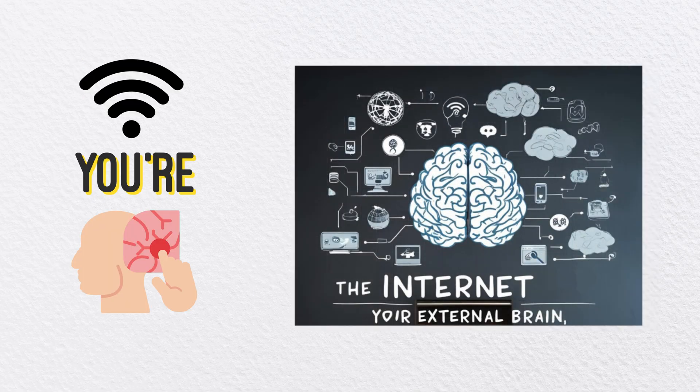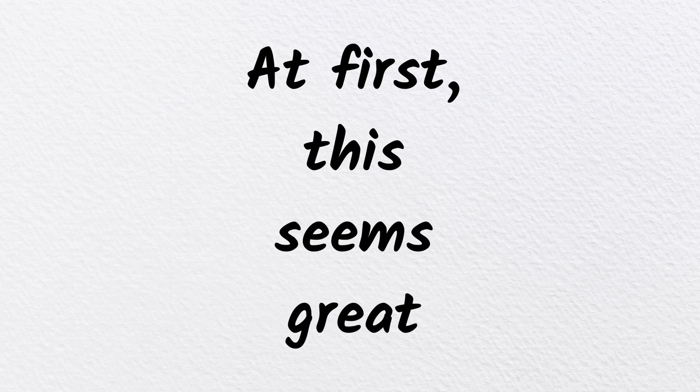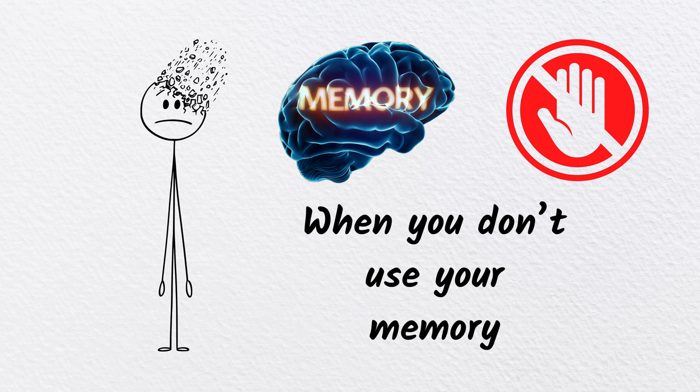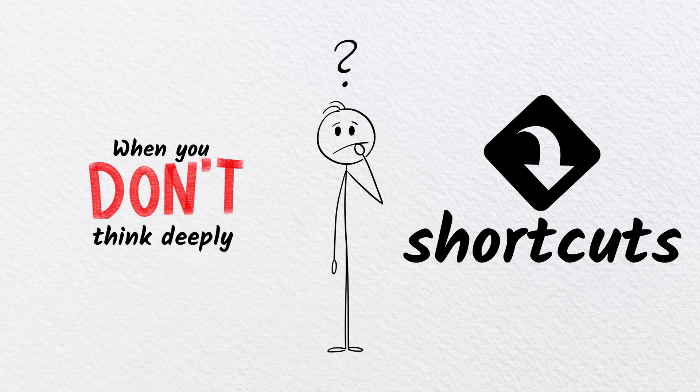The internet has become your external brain. Google, Wikipedia, AI chatbots. At first this seems great, but here's the catch: When you don't use your memory, your brain stops developing it. When you don't think deeply, you become dependent on shortcuts. When you don't challenge your brain, it gets weaker over time.